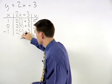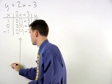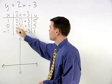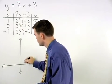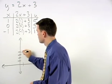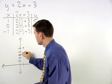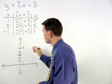So setting up our coordinate system, we have 1, 5, 0, 3, and negative 1, 1.